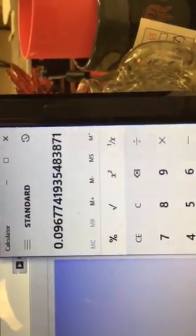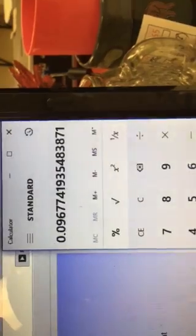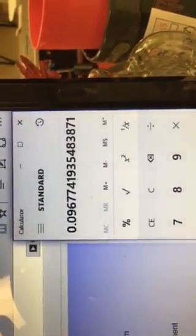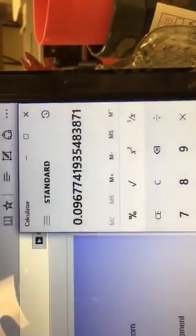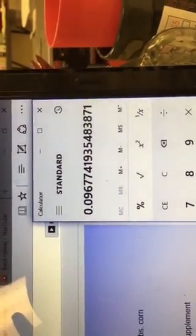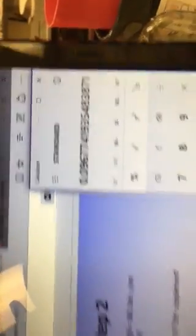Our next number is 3 divided by 31 and we get 0.0967. In this case the 7 tells the 6 to round up because the 7 is above 5, so we write down 0.097.